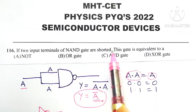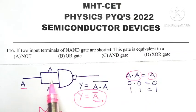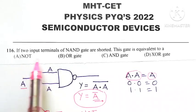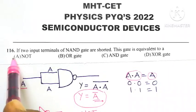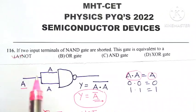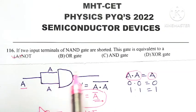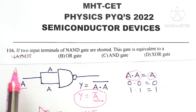So we can draw the conclusion that whenever input terminals of NAND gate are shorted, then that gate behaves like a NOT gate or we may call it as an inverter. So out of four options, option A is correct option. The correct option is A.